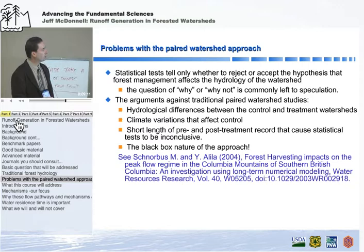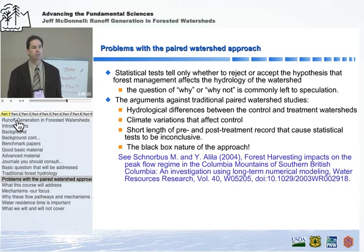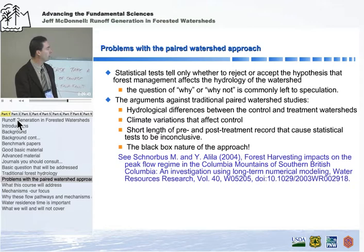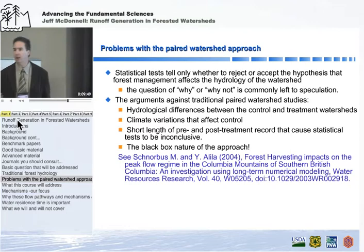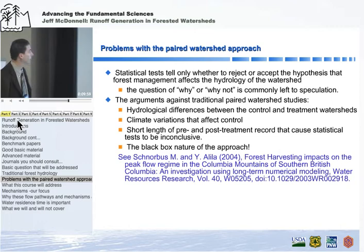Limitations of the paired watershed approach include hydrological differences between control and treatment that may not be apparent prior to the experiment, climate variations through time influencing the control, and often a short length of pre- and post-treatment record. This makes it statistically difficult, especially for peak flows over a couple of decades with only a few events of a certain magnitude. This isn't a criticism of the approach — what I'm offering is a complement to it, a way to peer inside how paired watershed studies work.